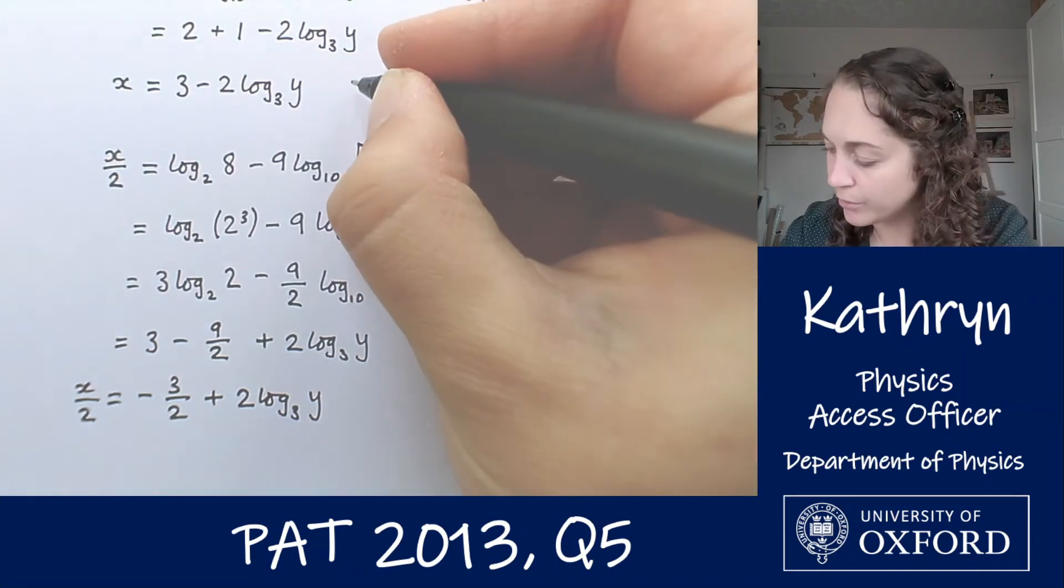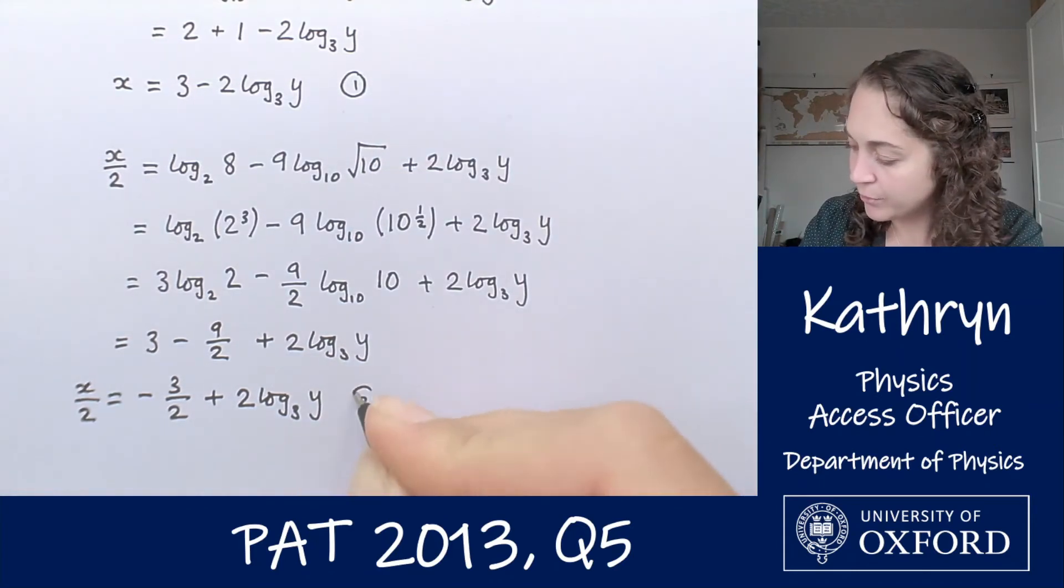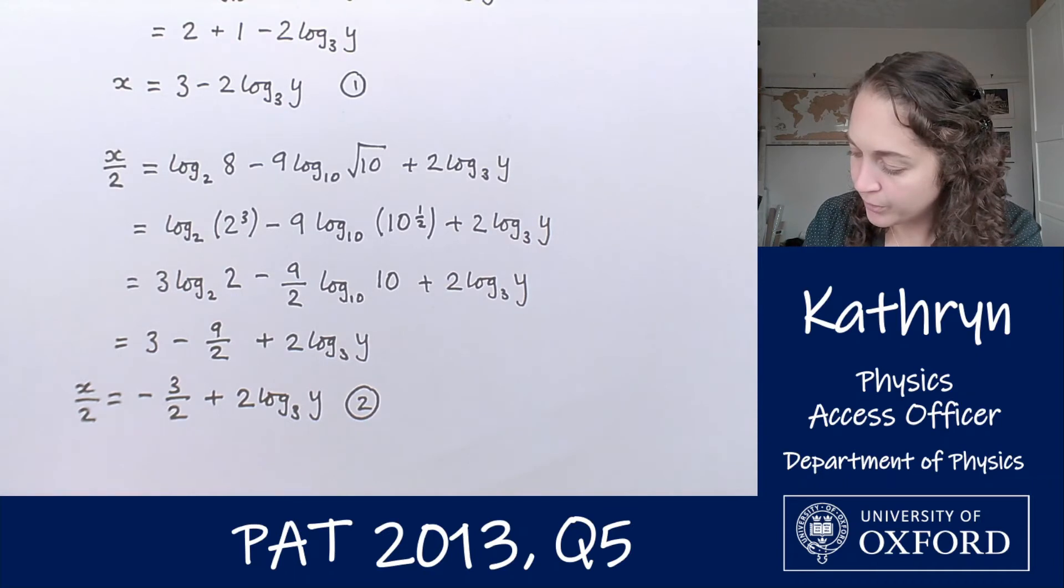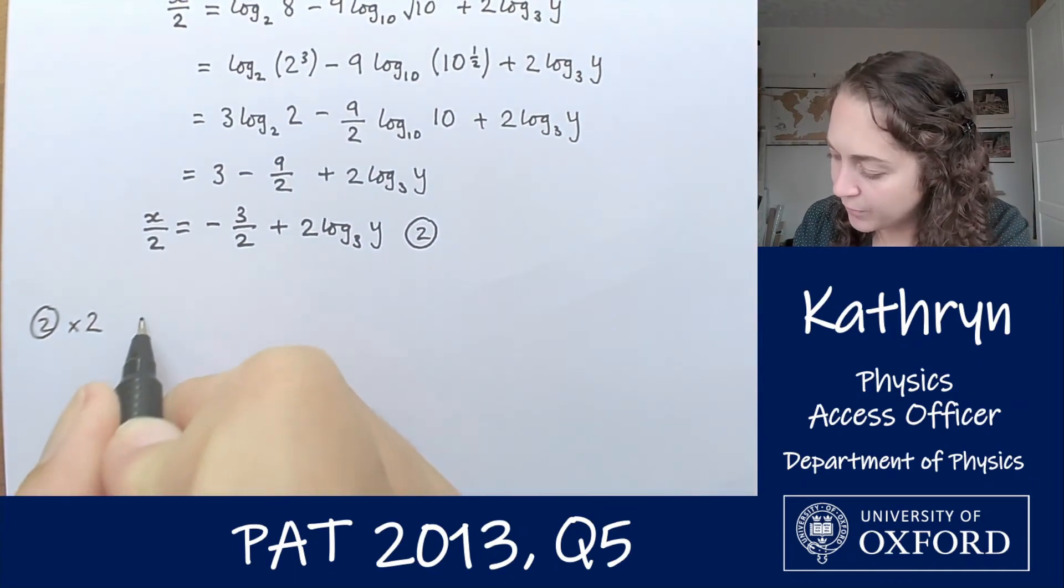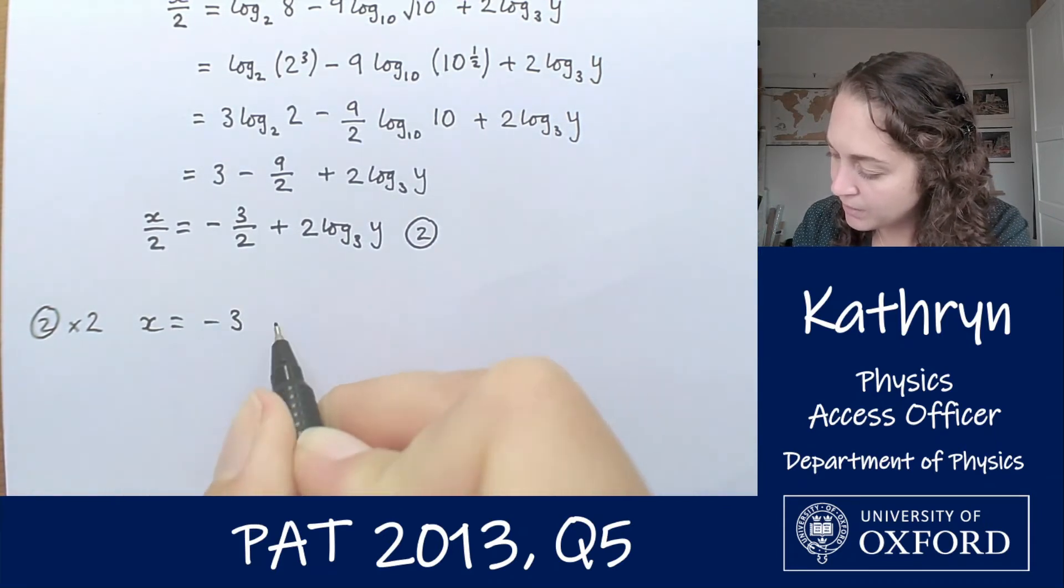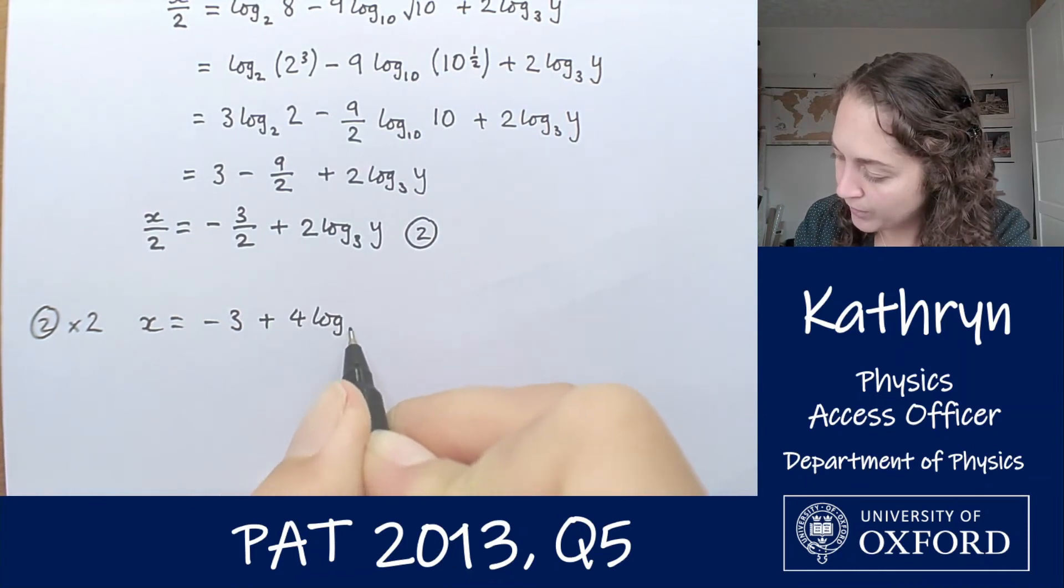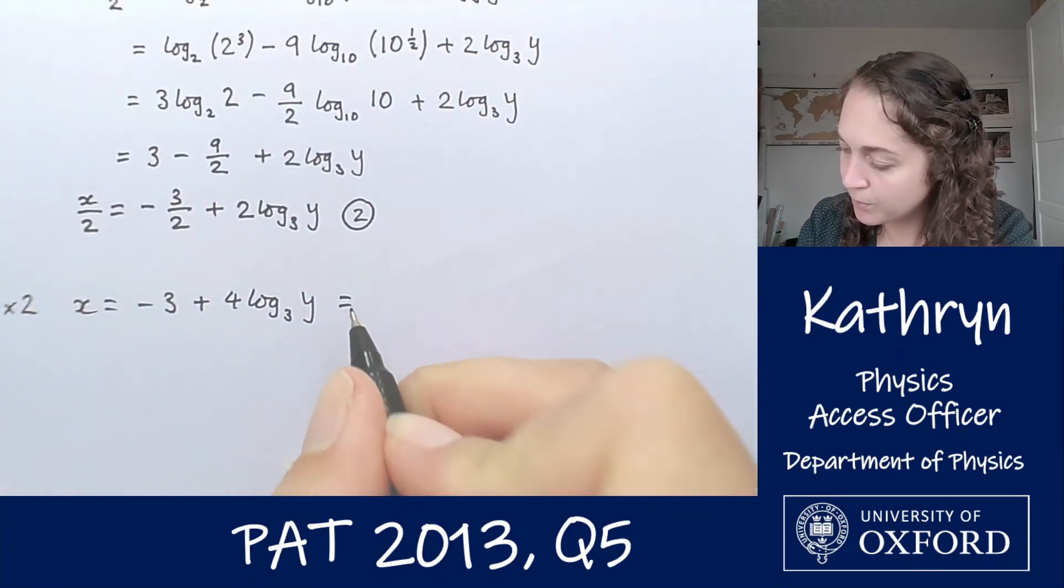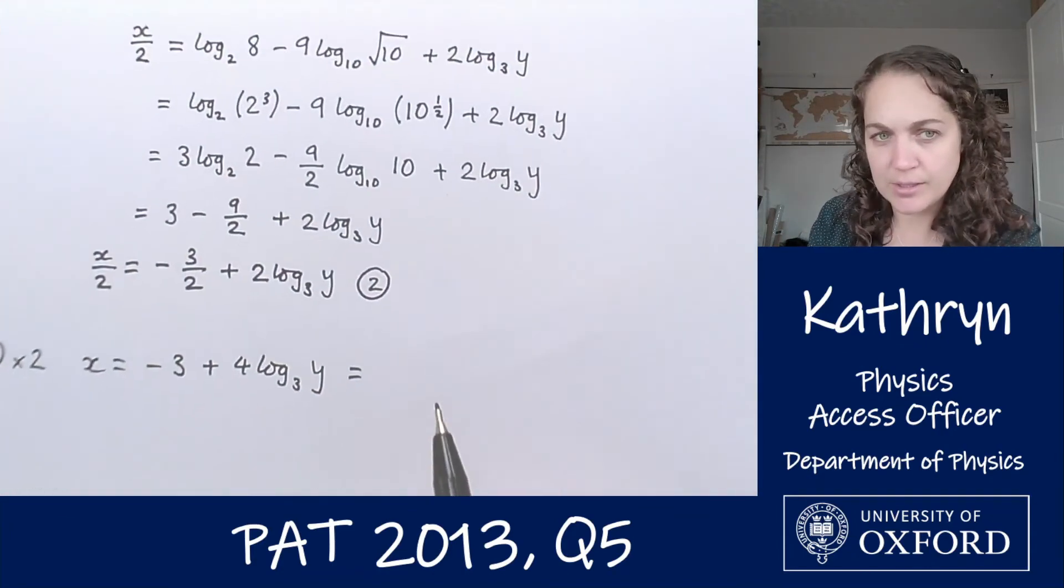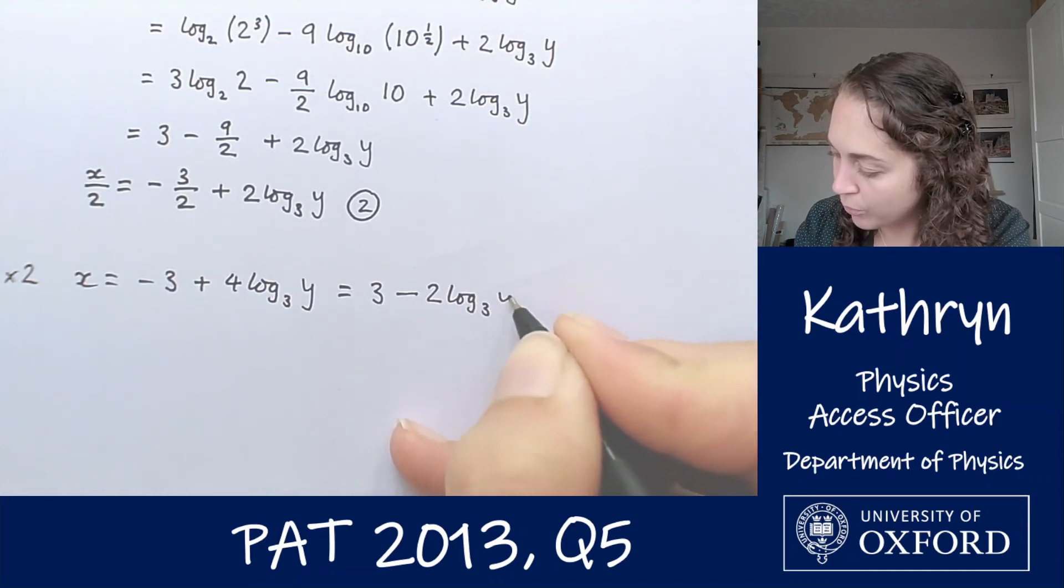I'm going to multiply this equation by 2. I'm going to call this equation 1 and this equation 2. So I'm going to do equation 2 times 2, and that is going to give me x equals minus 3 plus 4 log base 3 of y. And I can see that that equals equation 1, so x equals 3 minus 2 log base 3 of y.